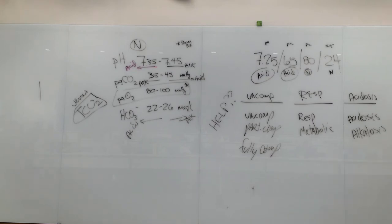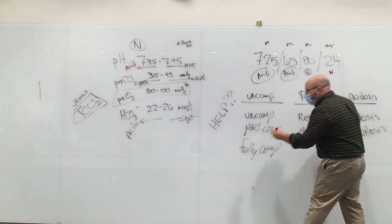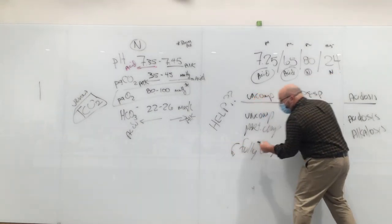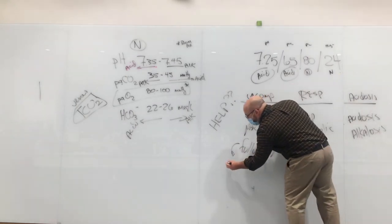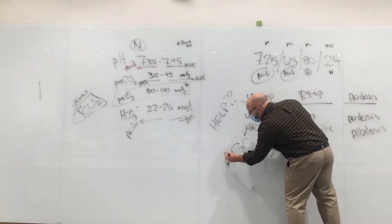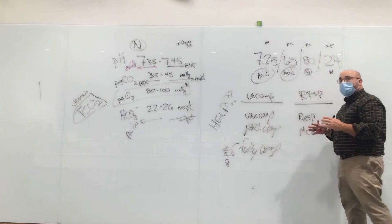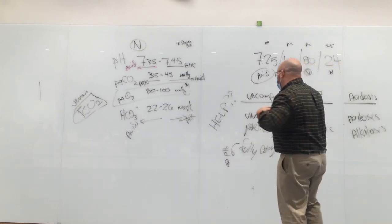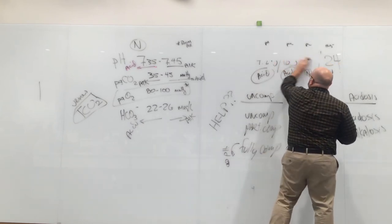This blood gas is uncompensated respiratory acidosis with normal oxygenation. The only way to be fully compensated is to have a normal pH — we don't see that very often.